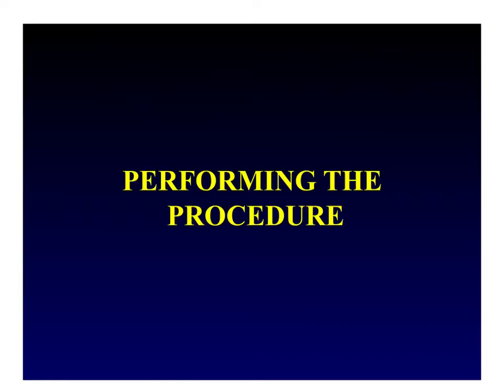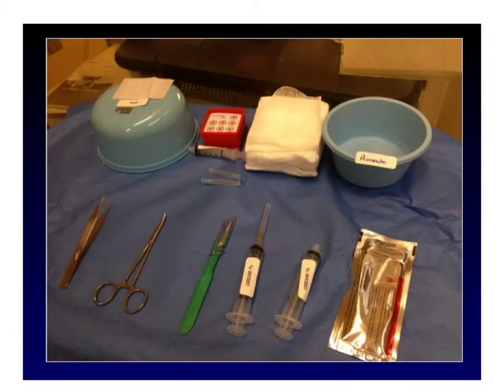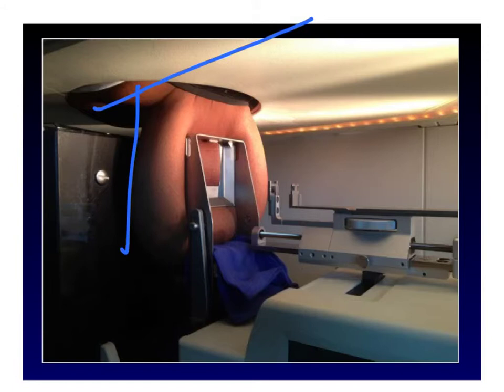Before you begin, set up your tray — including the needle guide, which we'll be using later. While you're setting up the tray, the tech will be positioning the patient on the table and placing her breast in compression. Here we have the patient laying prone on the table with her breast hanging down through the hole and being compressed in the CC view. The calcifications were located in the central breast on the CC view, and we are coming from a superior approach. We then take a scout view — an image straight on of the breast.